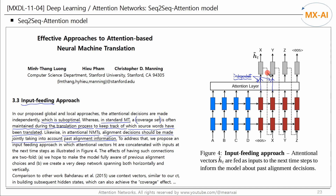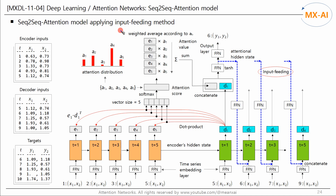To address that, they proposed an input feeding approach in which attentional vectors AT are concatenated with inputs at the next time steps, as illustrated in Figure 4. The effects of having such connections are two-fold. First, we hope to make the model fully aware of previous alignment choices. Second, we create a very deep network spanning both horizontally and vertically. This model was designed for machine translation, but here we will apply it to time series forecasting.